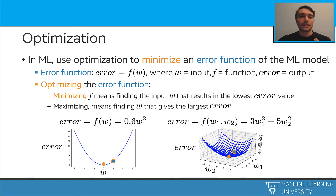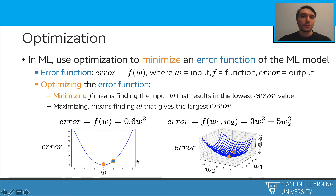Let's take a look at these visualizations. My first error function is f of w = 0.6 times w squared. This is a simple function. If I try to find the minimum of this function, this orange point is going to be the point that I will be looking for. Similarly, if I want to find the minimum of this second function, which uses two inputs, this orange area is the minimum.